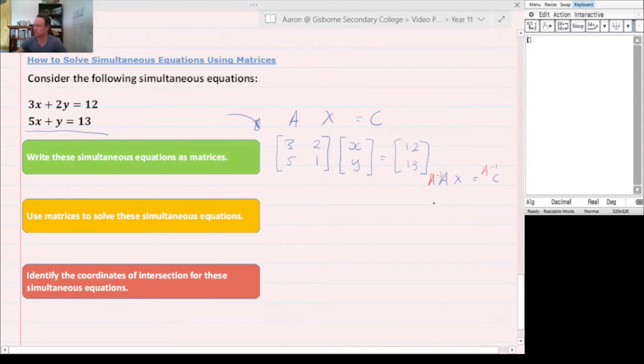Based on our previous experience, we know that A to the negative 1 times A is an identity matrix. That's now the identity matrix times X and the inverse matrix of A times C. We know that anything times an identity matrix is itself, so that now is X. We've effectively gotten rid of our A's. That equals A to the negative 1 times C. So if we find the result of A to the negative 1 times C, we will get the x and y values.